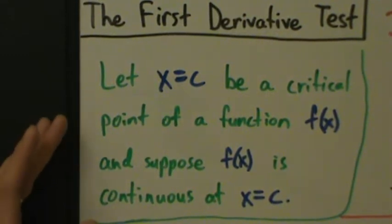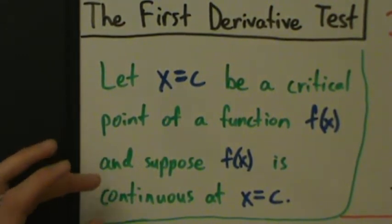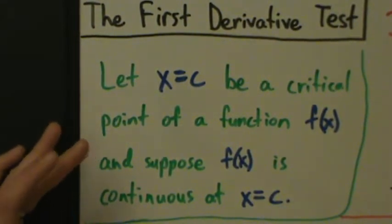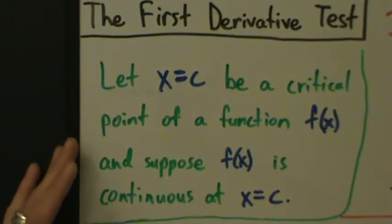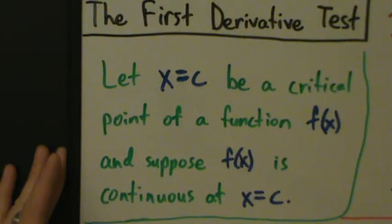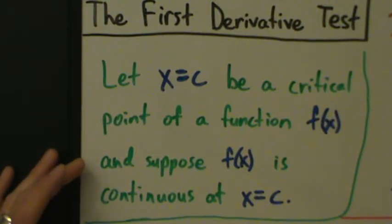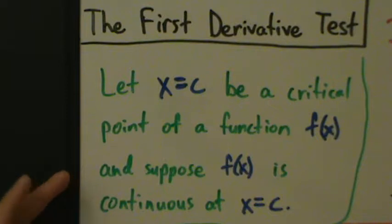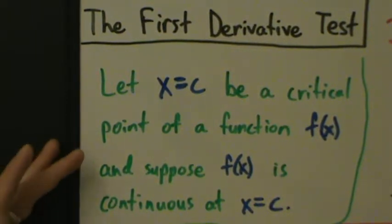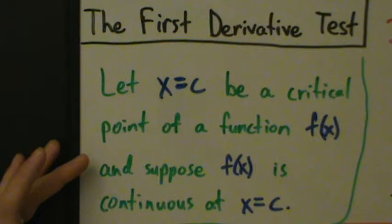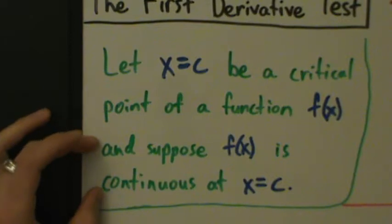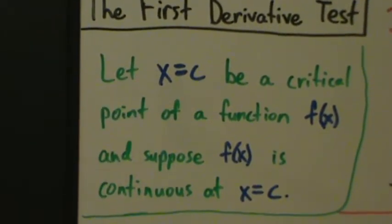You might be thinking: what do we do if we have a critical point and the function is not continuous there? In that case, probably the safest thing you could do would be to graph the function, maybe on a graphing calculator. To be honest, when I learned this stuff and every time I've taught it, I've never had any examples come up where you had a critical point where the function was discontinuous there. So just remember to check that the function is continuous at the critical point before you apply the test.